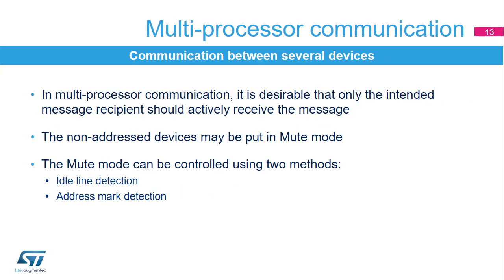To simplify communication between multiple processors, the LPUART supports a special multiprocessor mode. In multi-processor communication, it is desirable that only the intended message recipient should actively receive the message. The non-addressed devices may be put in mute mode using two methods: idle line or address mark detection. The LPUART can enter or exit from mute mode using idle line detection or address mark detection.